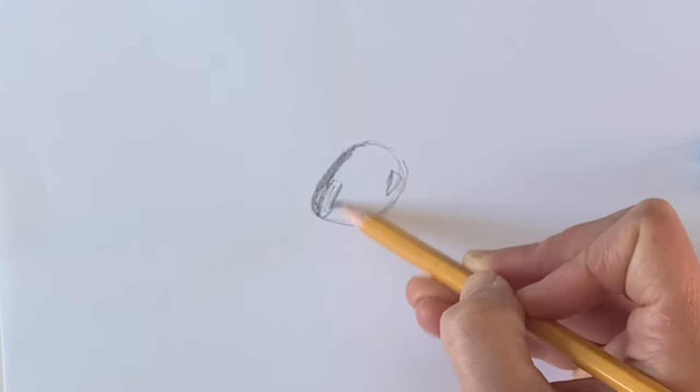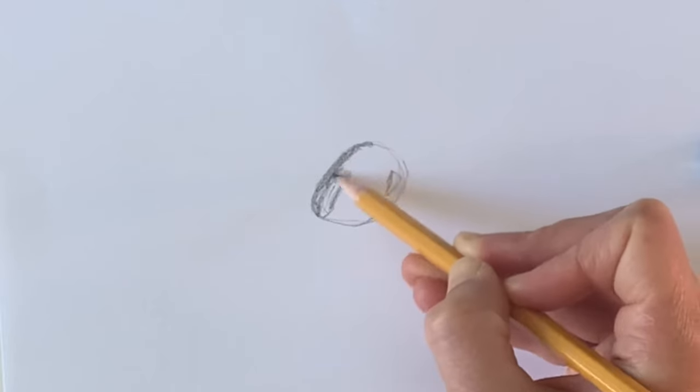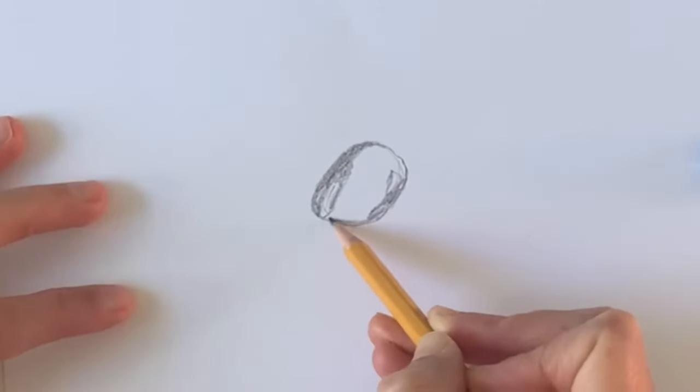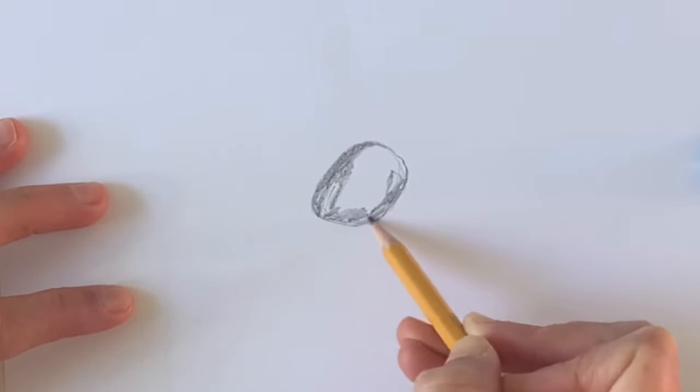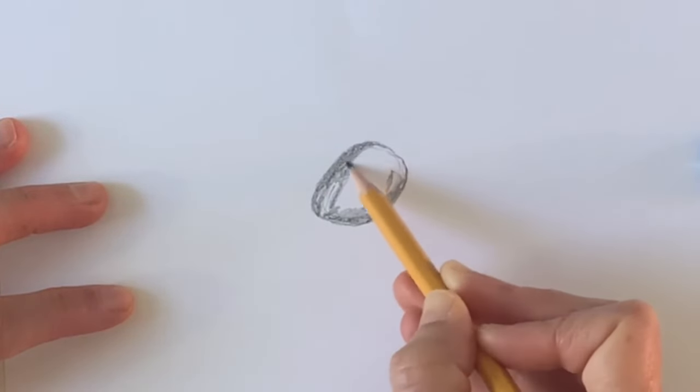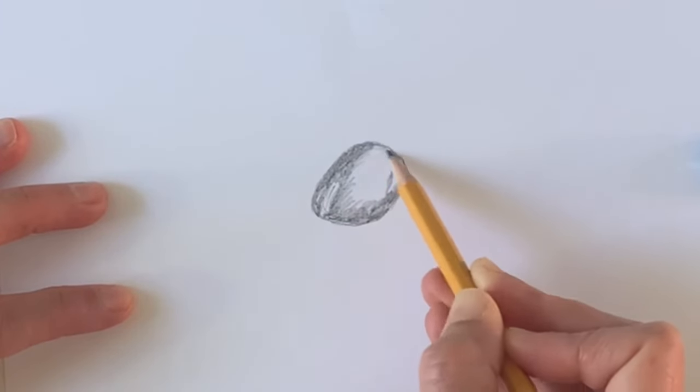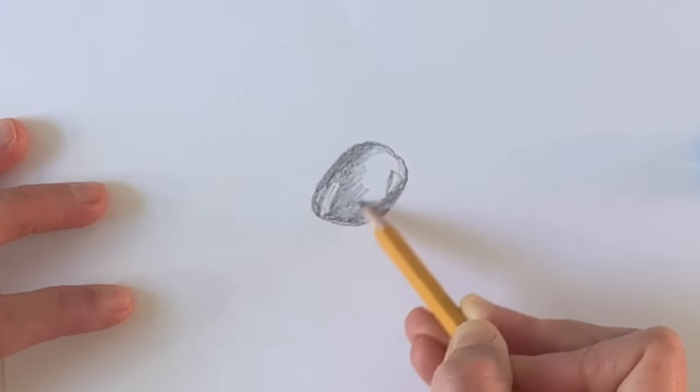With my pencil, I'm going to shade around my highlights, pressing down for a medium value. If you've never shaded before, click the link above to practice doing a value scale so you understand how to shade and how to use value with a pencil. So this would be a medium gray—it's not too dark, it's not too light, it's somewhere right in the middle.